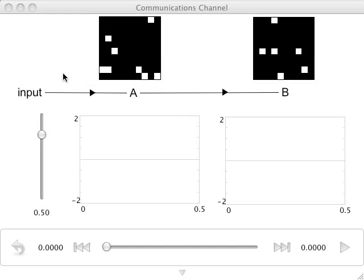Here we have a simple communication channel, where the information from the input is driving population A, whose spiking activity is shown here, which is then driving population B, whose spiking activity is shown here.